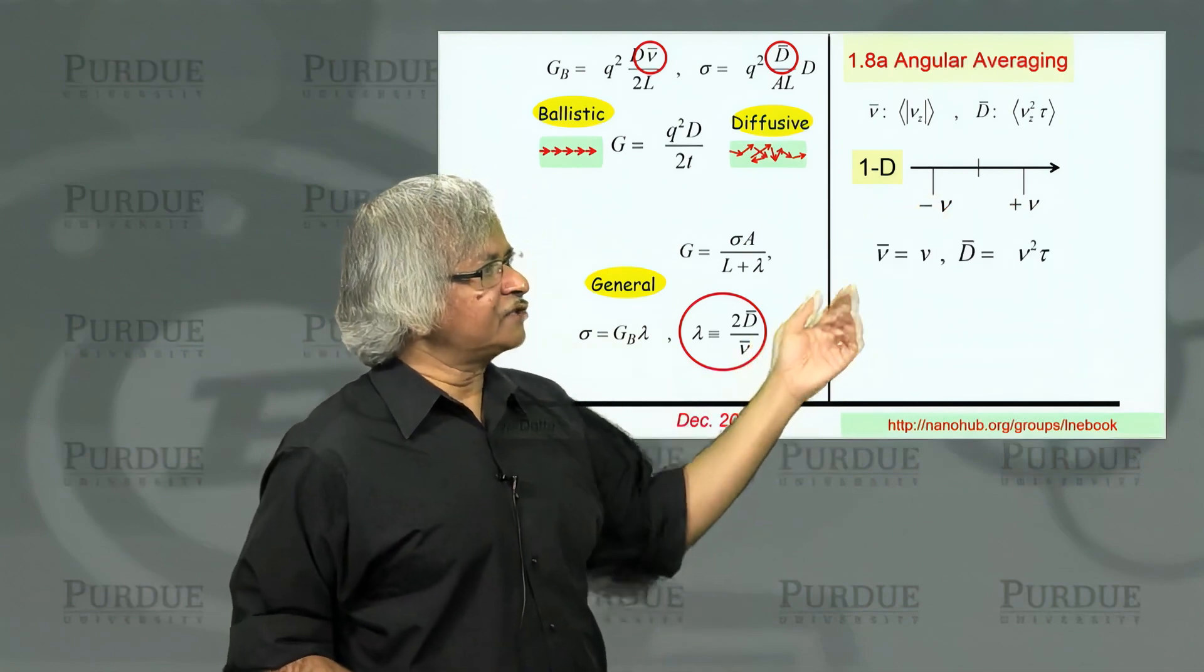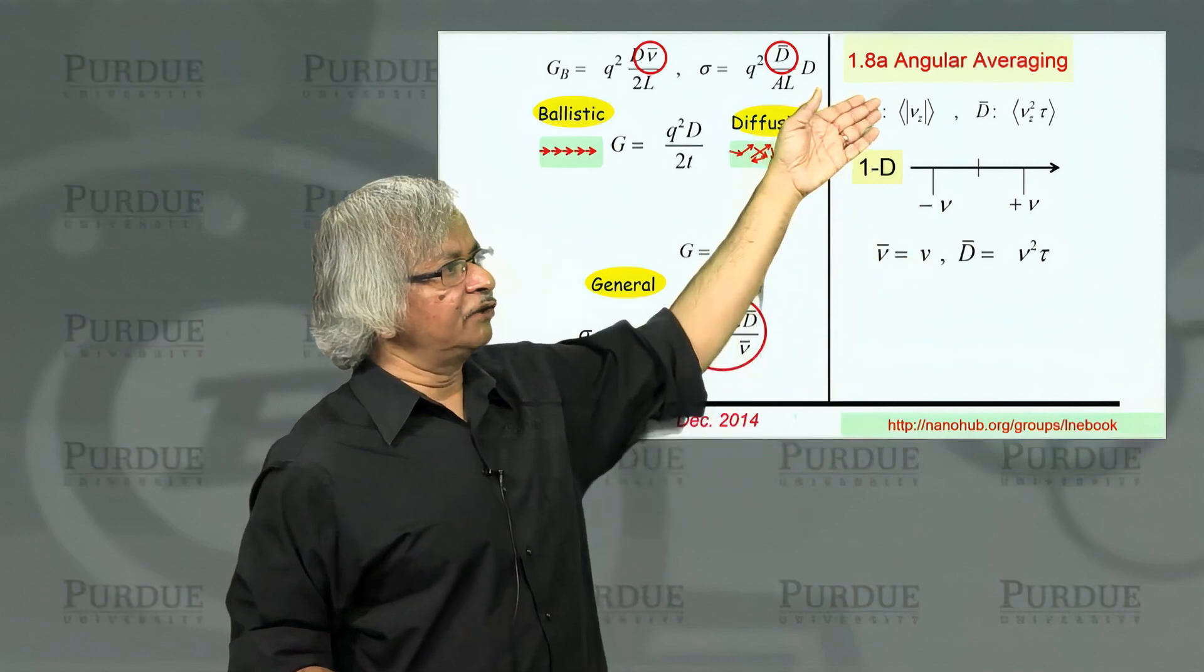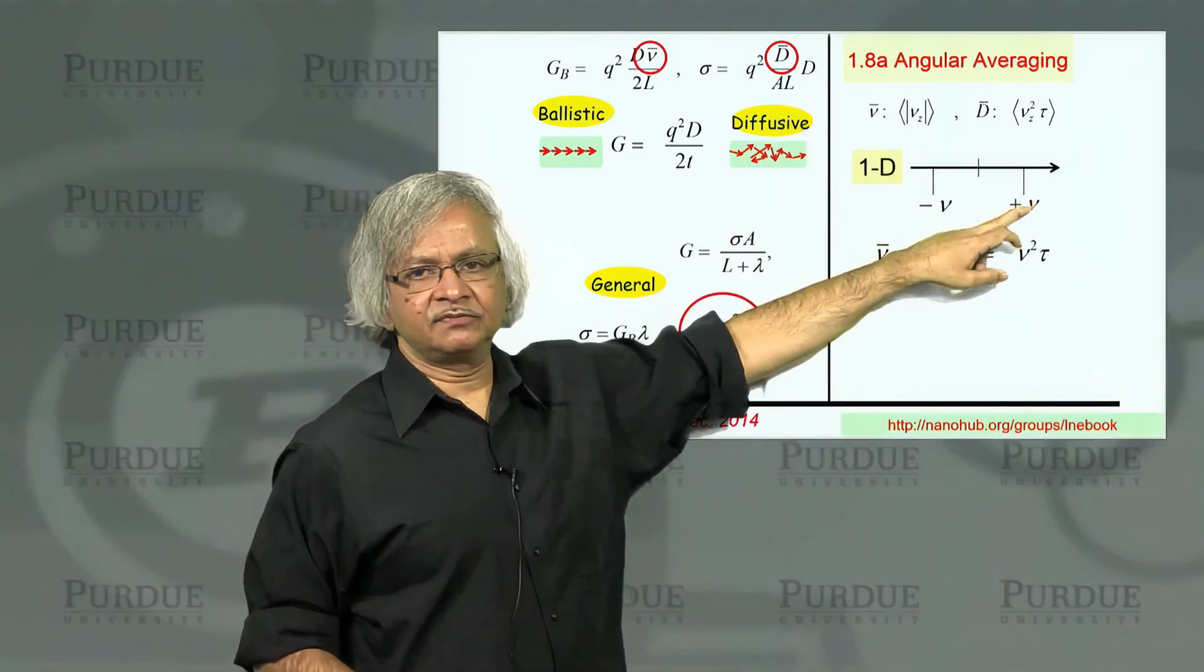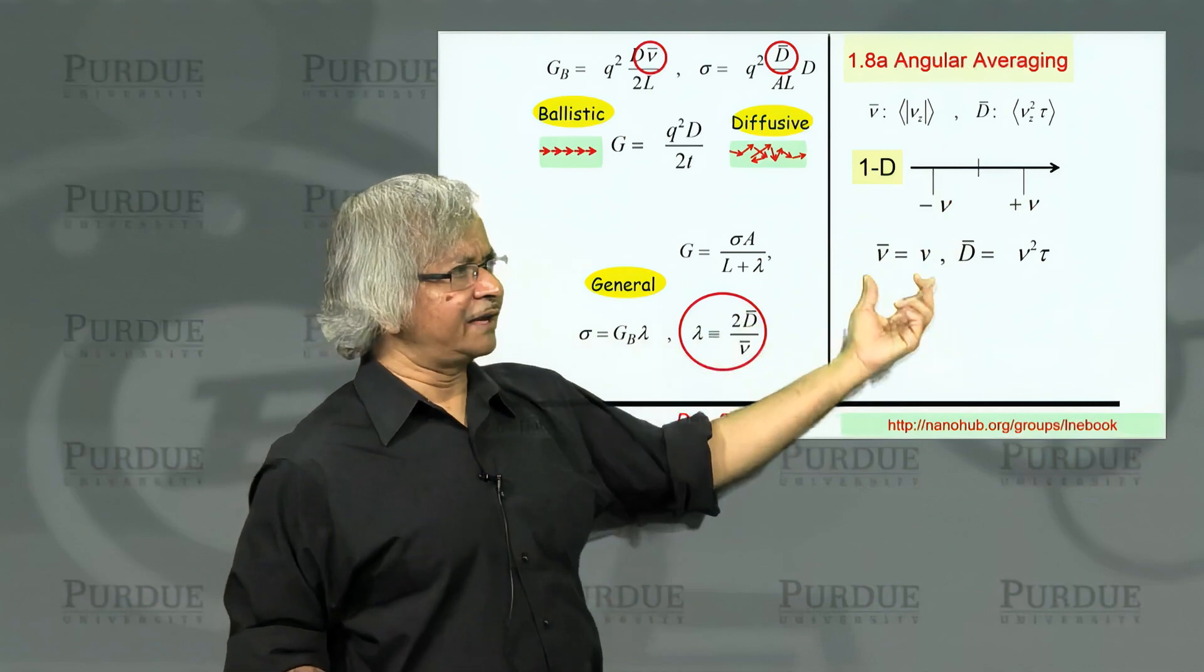No other value because, as I said, we are considering electrons with a single energy. As you know, in this elastic model, you can think of one energy at a time and then do an integral over energy. So you are considering one energy, one particular value of velocity, but it can be plus or minus. Now, so what is the average value? Well, average value of v bar has got two possible values, plus v and minus v. So basically, the average value is just v.